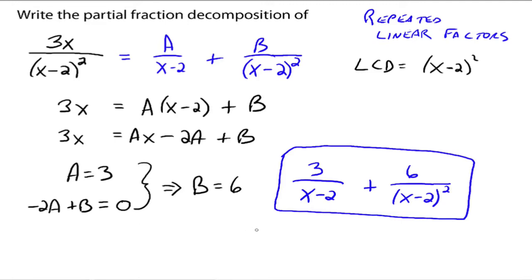If you take those two fractions and add them up, you get the original fraction back. One reason we use partial fraction decomposition is for calculus — the calculus technique might be difficult on the original fraction, but if you rewrite it as simpler fractions, the calculus becomes easier to do. That's the idea with repeated linear factors: you need all the individual fractions with repeated denominators.